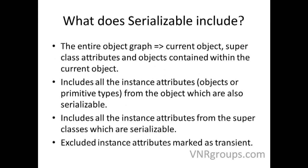The Serializable interface, when it saves an object, actually saves the entire object graph of that object. That includes the current object and the attributes that it inherits from its base classes. And if that object contains other objects which are serializable, then those objects are also serialized.